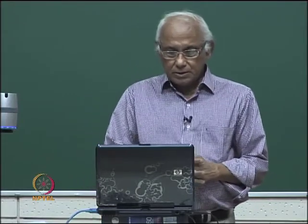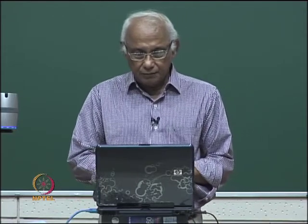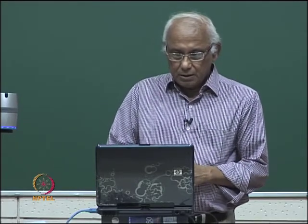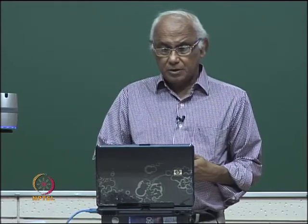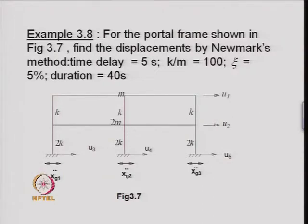In the last lecture, we discussed the frequency domain solution of the single and multi-degree of freedom system. We discussed obtaining the frequency contents of the ground motion and using that frequency content, we solved the problem in the frequency domain, obtained the frequency contents of the response, and then applied the inverse Fourier transform to obtain the time history. For the multi-degree of freedom system, we require the R matrix, whereas for the single point excitation system, we require the I matrix or I vector.